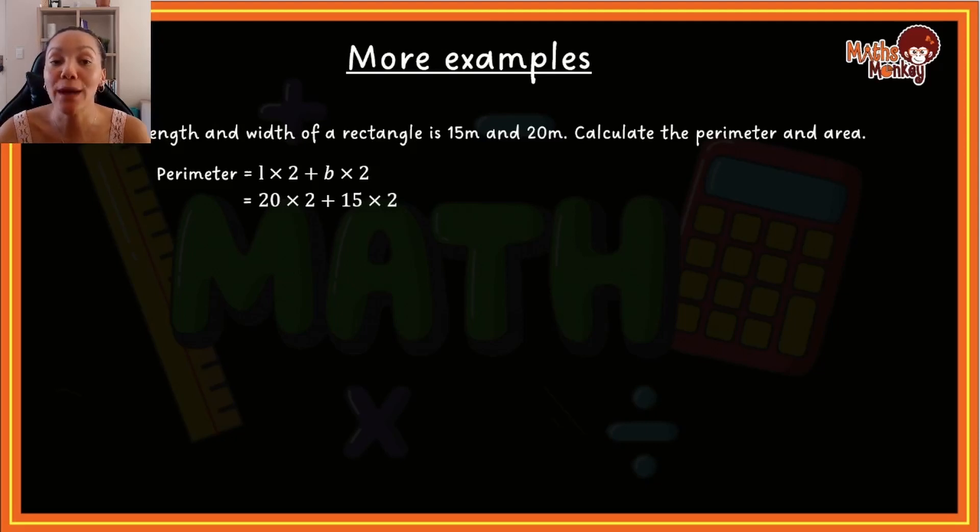So we go 20 × 2 is 40, and then 15 × 2 is 30, and 40 + 30 then gives me 70 meters. Take note here that my unit is the same unit that the question is in, and I leave it as is.